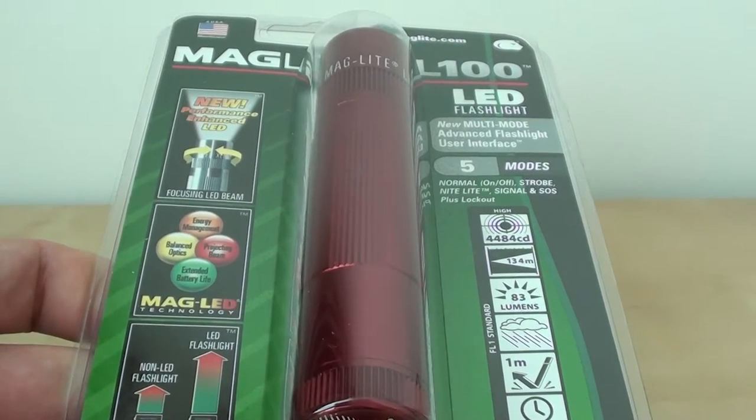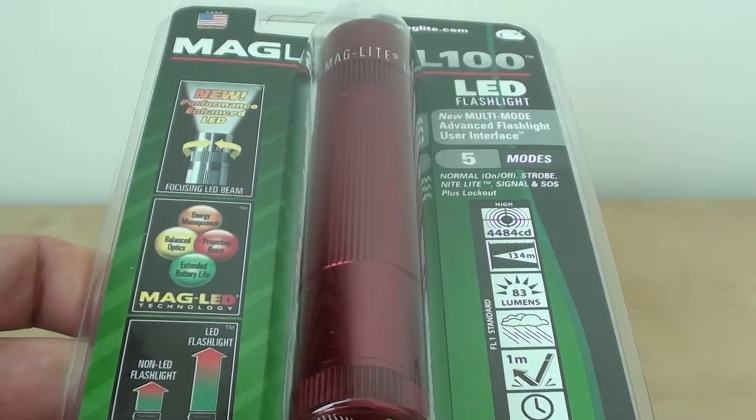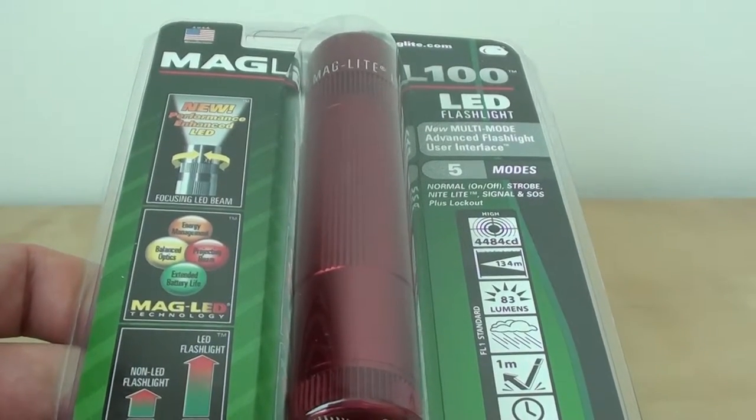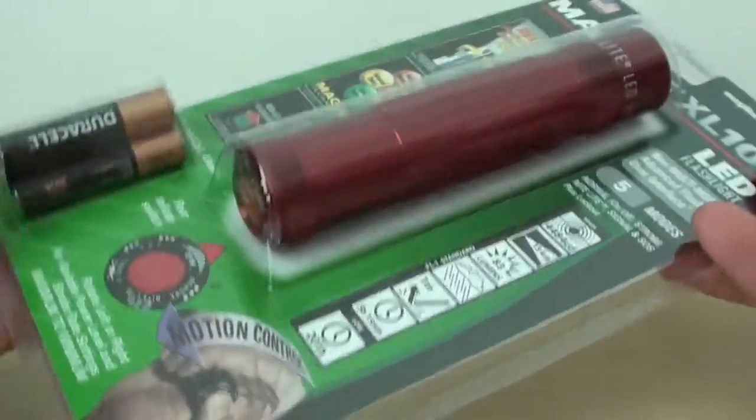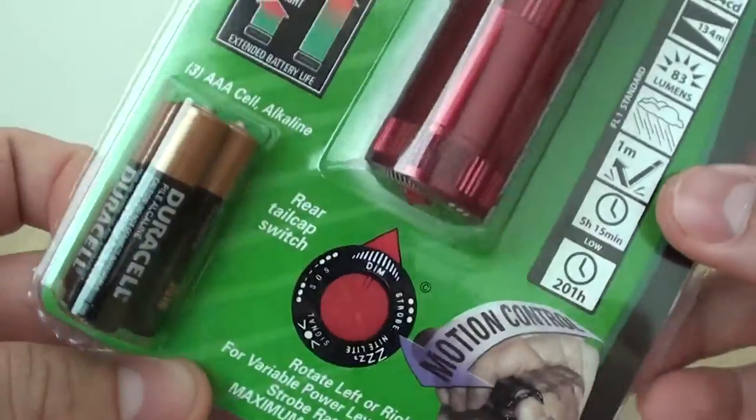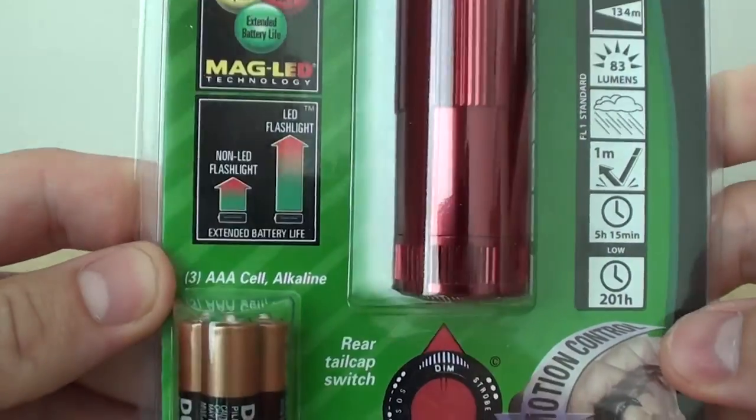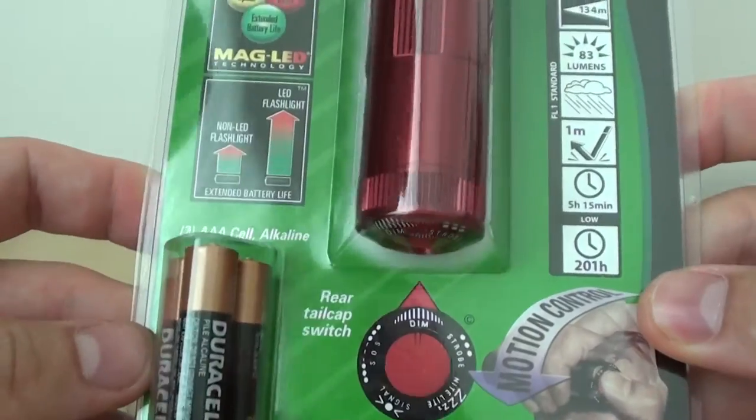Welcome to a quick review of the MagLight XL100 LED Flashlight. It comes in blister packaging, as you can see here, with AAA batteries. You need to run them with three AAA batteries.